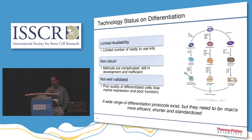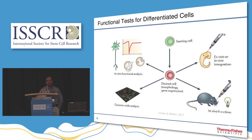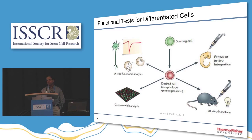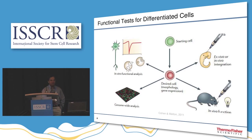The function tests carried out for most differentiated progeny need to include not just in vitro functional analysis, but also gene expression from a starting cell type, desired cell morphology, and whether — when transplanted — they will mimic what happens within the body or integrate with in vivo organogenesis. When transplanted into animal models, do they show what they are expected to perform?